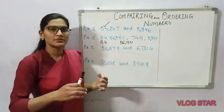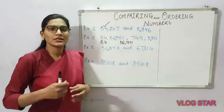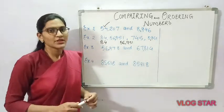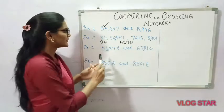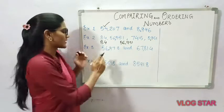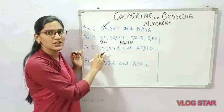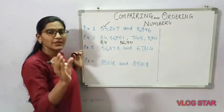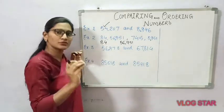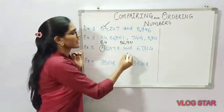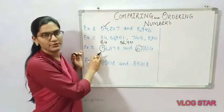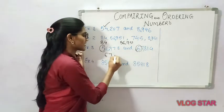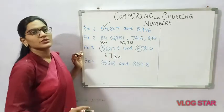The second condition is: if two numbers have an equal number of digits, how do you compare them? Let's take another example. Here we have two five-digit numbers: 56,978 and 67,814. We compare them starting from the first place value — the ten-thousands place. The first number has 5 and the second has 6 there, so 67,814 is the bigger number.